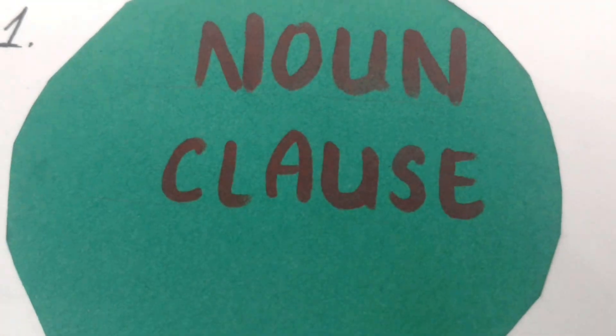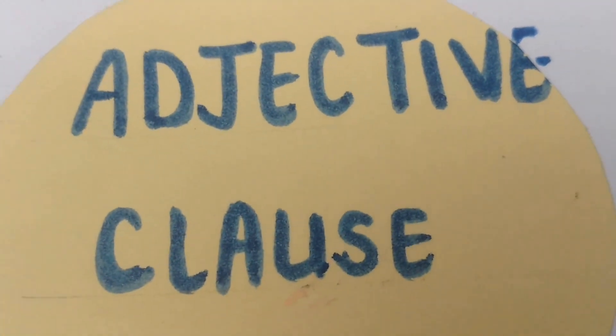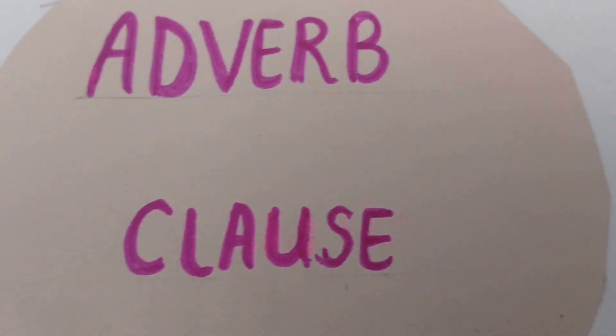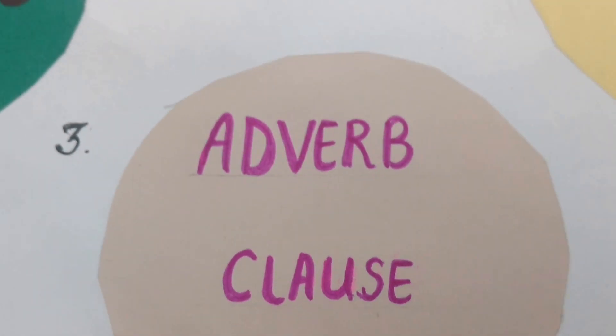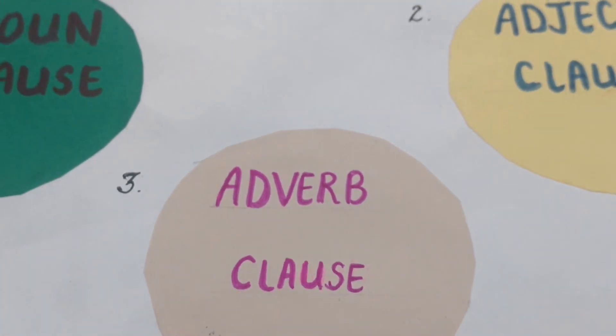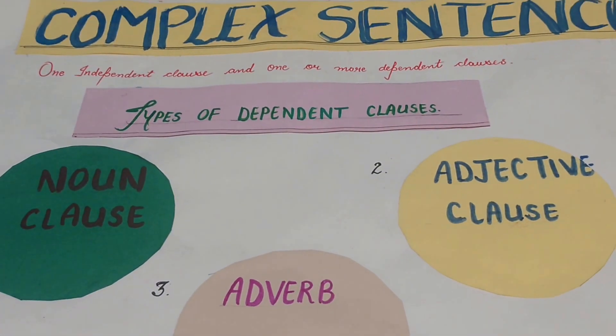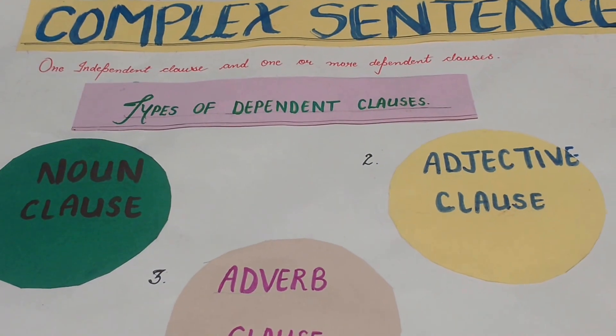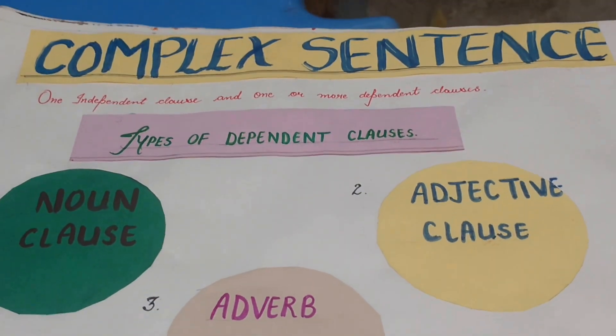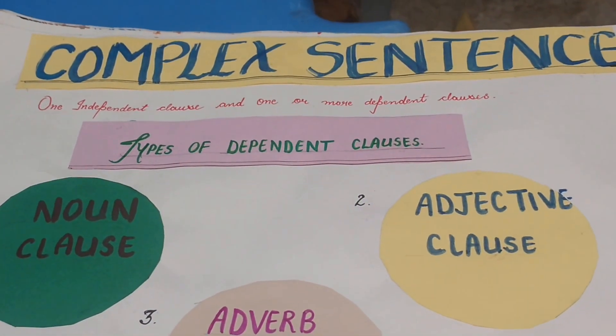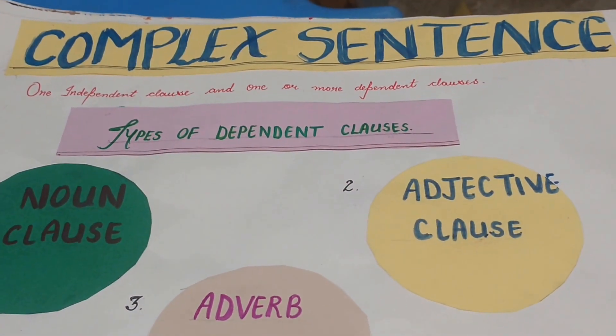If we divide the dependent clause into three categories: first, noun clause; second, adjective clause; third, adverb clause. Before discussing these, I will tell you about the clause. A clause is a group of words which contains a subject and a predicate but does not make a complete sentence.